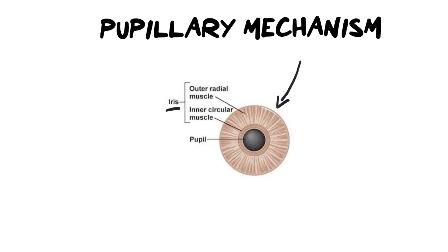It has an outer radial muscle — radial means that it's long and elongated, it radiates outwards. And then it has an inner circular muscle, which sits around the pupil. As the name suggests, it is circular. And it is these two muscles that move and change the size of the pupil.